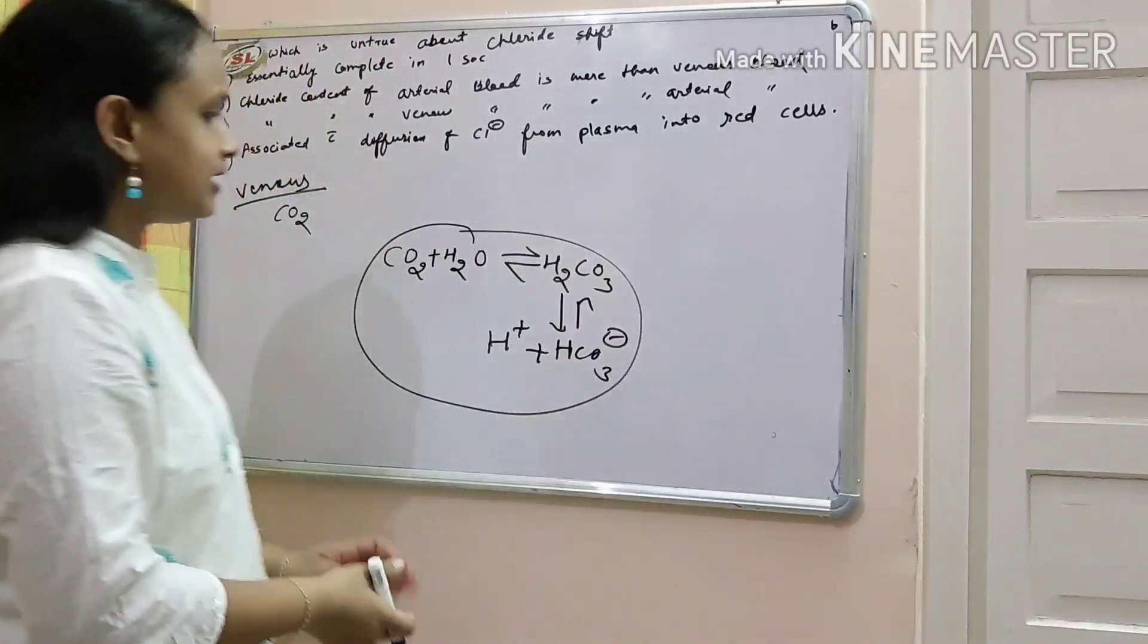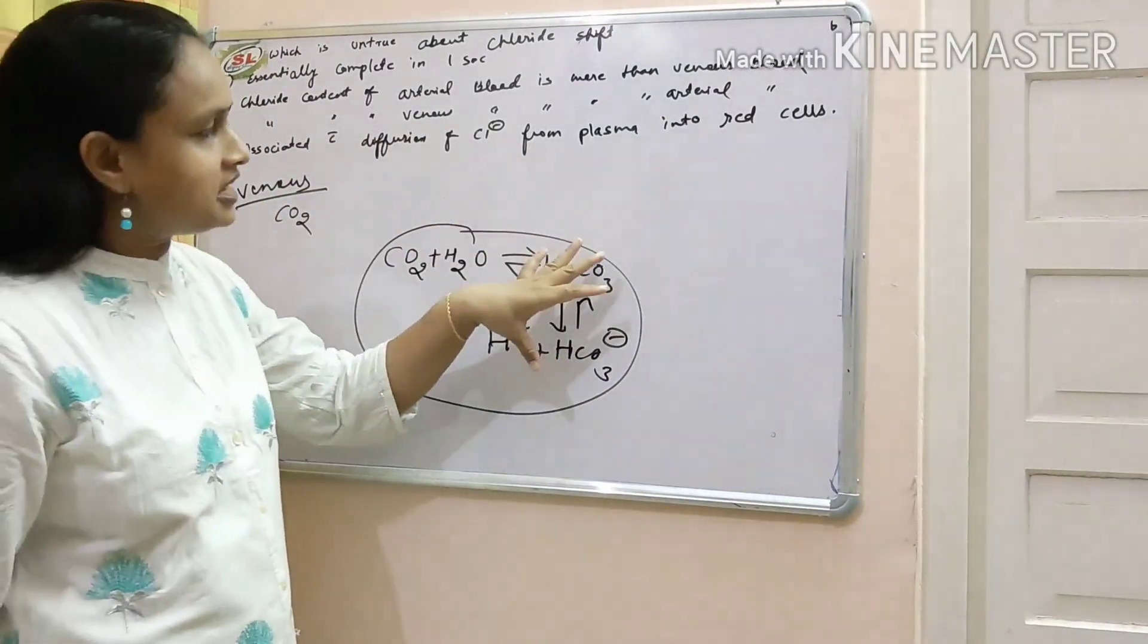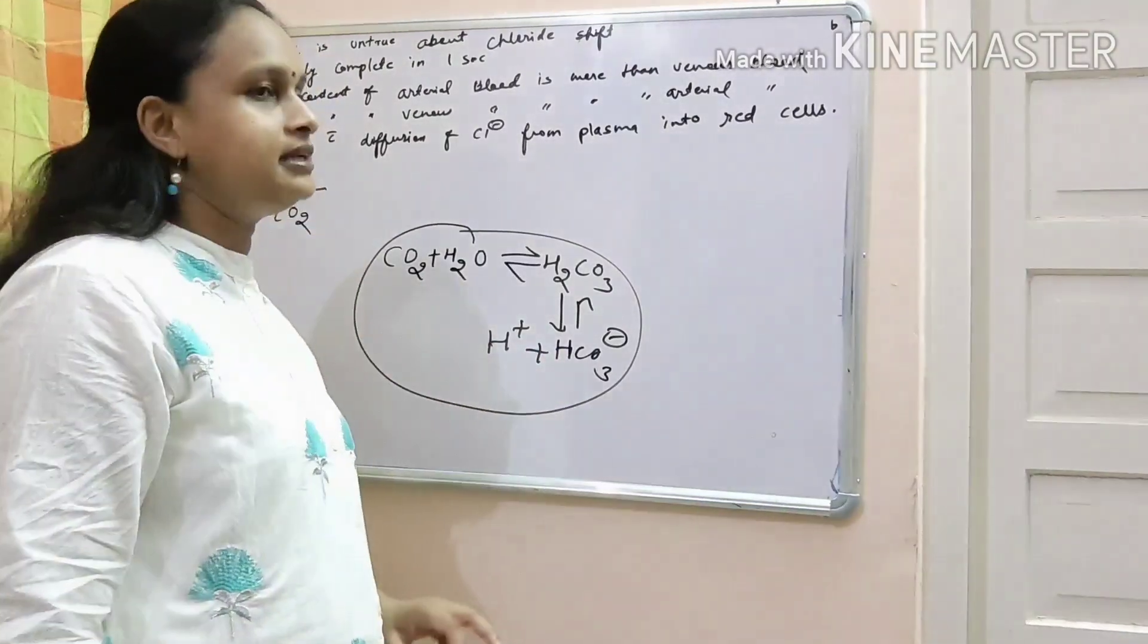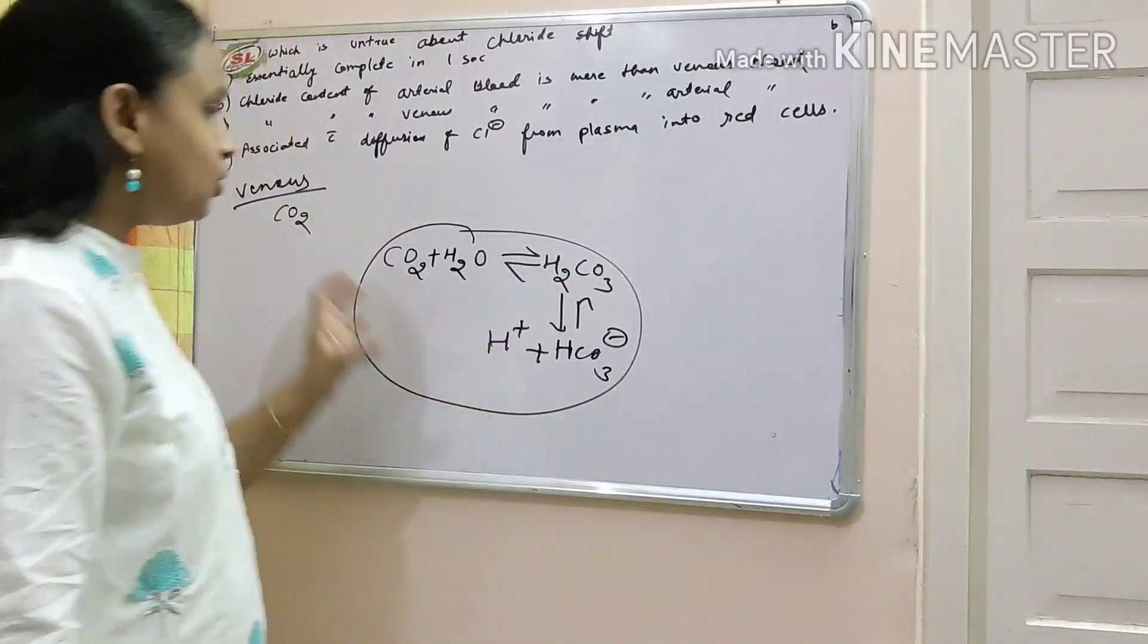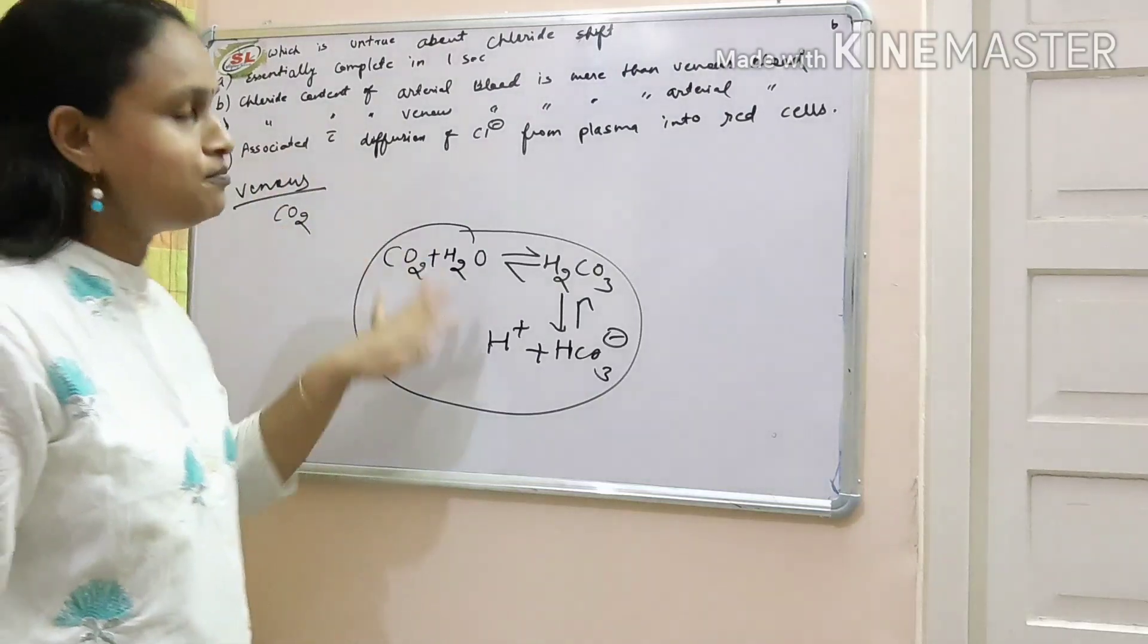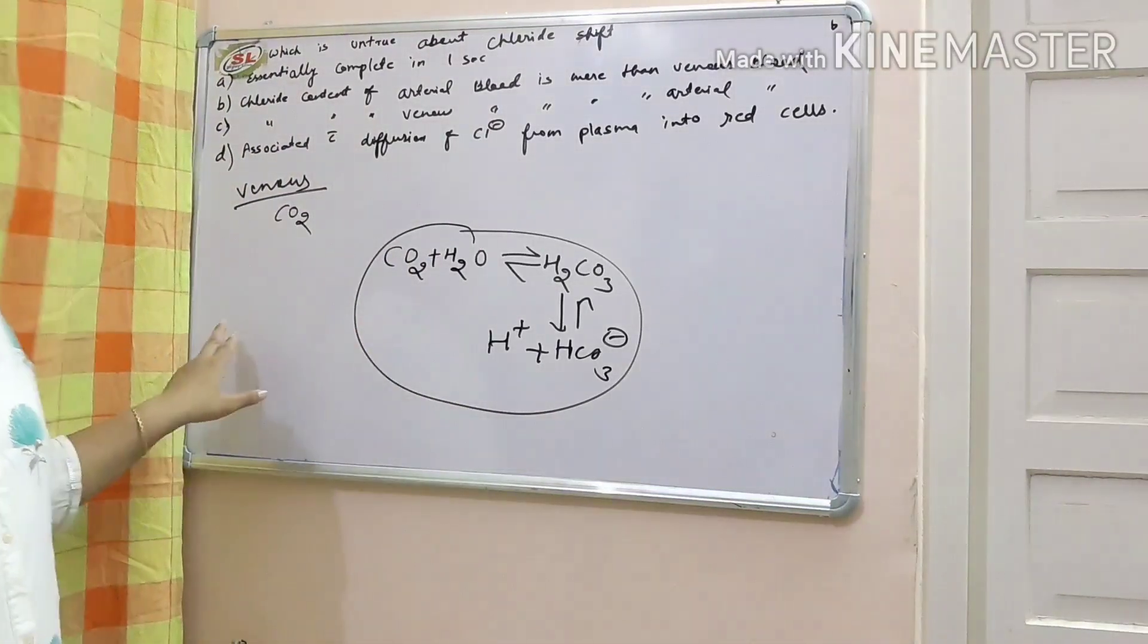Whenever this reaction occurs, CO2 is coming, it is combining with H2O, making H2CO3 and it is dissociating in H plus and HCO3 minus. Carbonic anhydrase is in more concentration in RBC. So this reaction is more important in RBC rather than plasma. This reaction also happens in plasma.